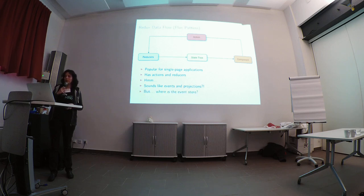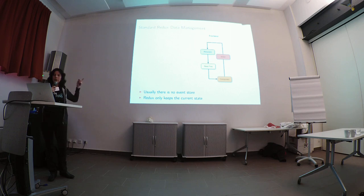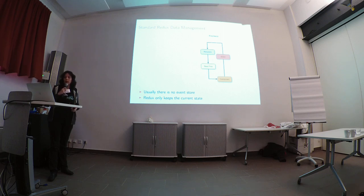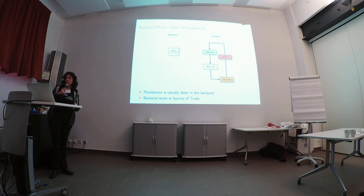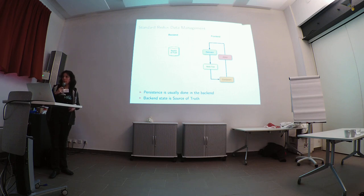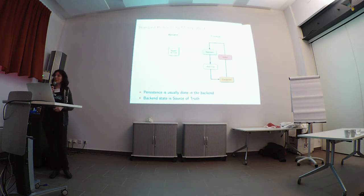If we think about this for a bit — aren't these actions and reducers actually like the events and projections we had before? But where's our event store here? It's sort of missing. Usually in React and Redux there is no event store — maybe one under the hood but nothing accessible. So Redux actually turns this event source-like architecture into a relational database architecture, because it only keeps the current state. In a standard application you need to persist this in the backend, since your browser can be shut down at any minute.